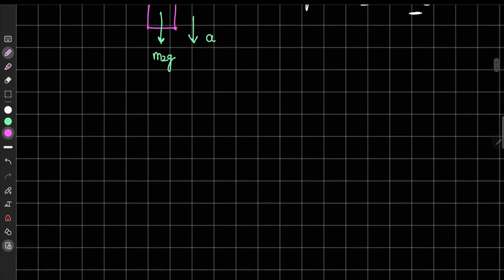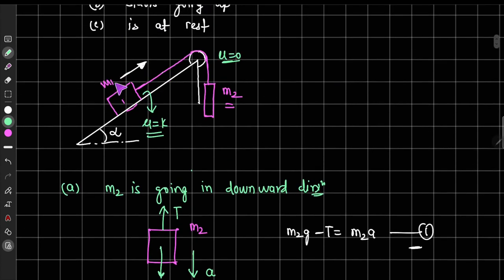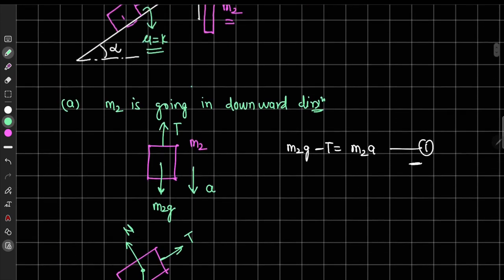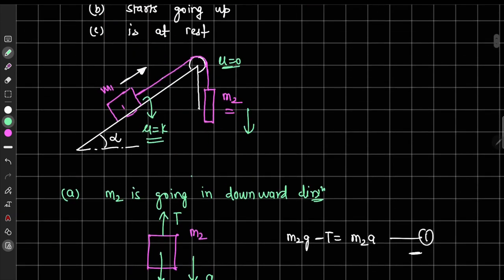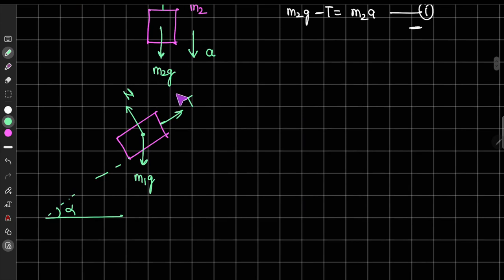Now let us draw the free body diagram of mass m1 on the inclined plane making angle alpha. We have gravitational force m1g downward, normal force from the inclined surface, and tension T pulling m1 up the incline. Since m2 goes down, m1 goes upward and will attain velocity in that direction.